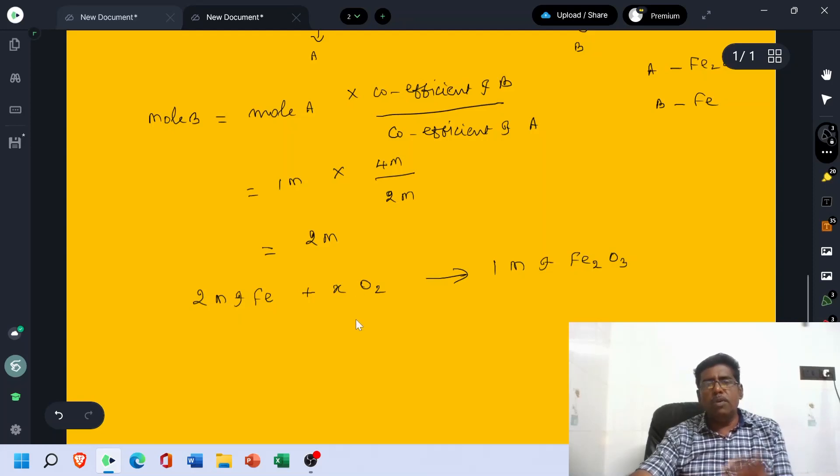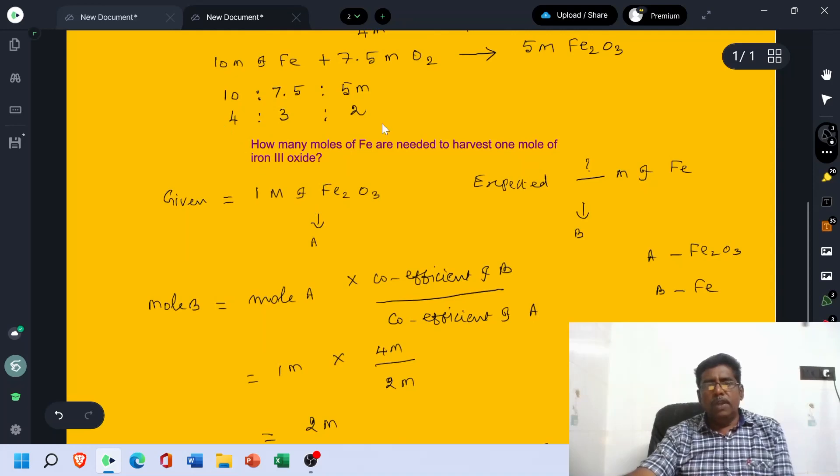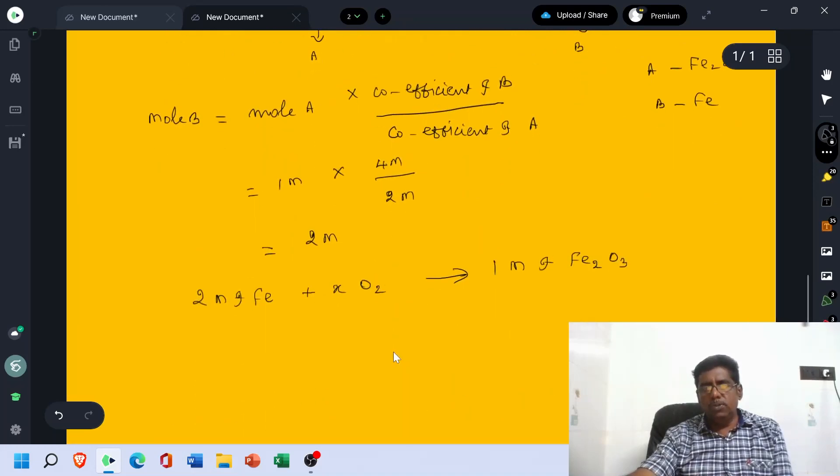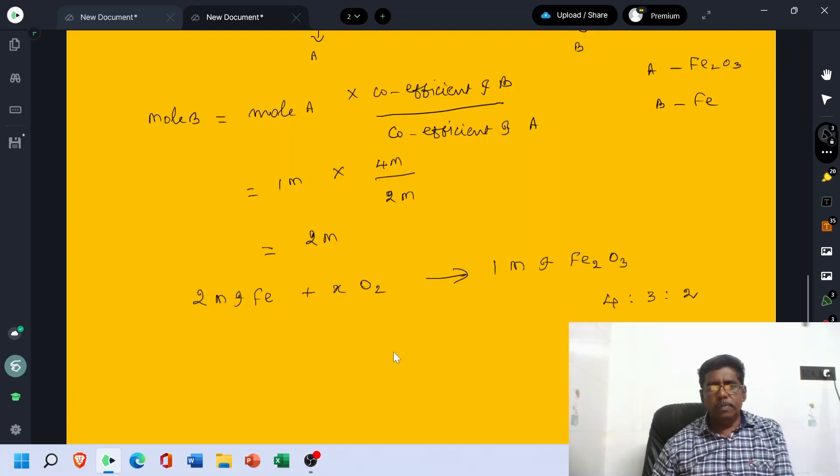But they are not asking about how many mols of O2 is needed. Anyway, we have to maintain the ratio of 4 is to 3 is to 2. If it is the case, we have to add 1.5 mol of O2. So the entire equation is 2 mol of Fe plus 1.5 mol of O2 gives 1 mol of Fe2O3.